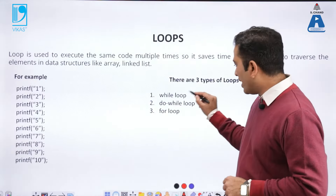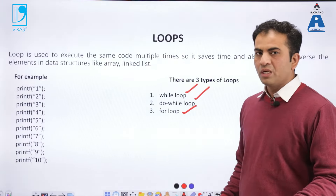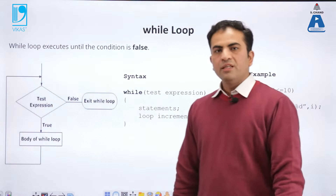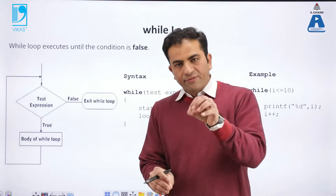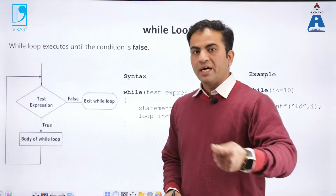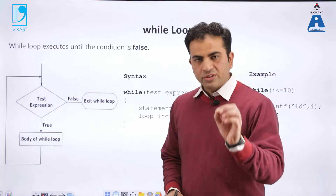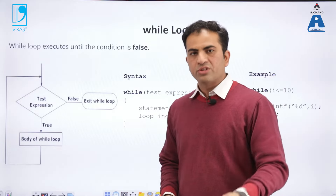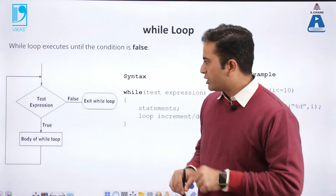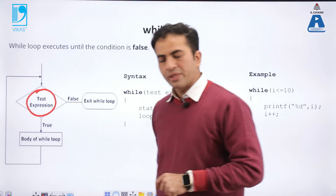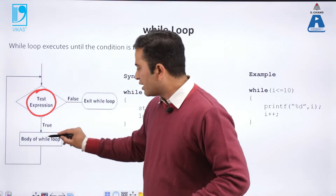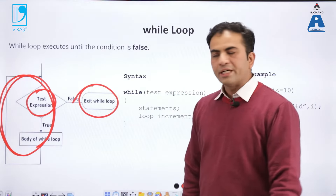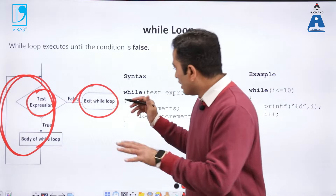The while loop, do-while loop, and for loop are the most important loops — there is no other loop in any programming language. In the while loop, first we check the condition. If the condition is true, we move forward; otherwise there is no further movement. That loop will continue until the condition becomes false. This can be understood with a flowchart: there is a test expression or condition. If true, the body of the loop runs; if false, the statement exits the while loop.